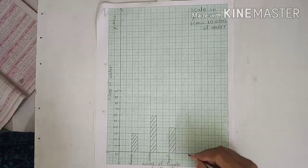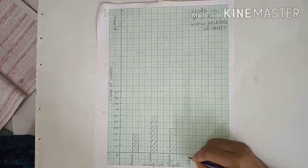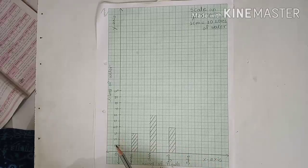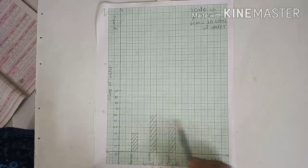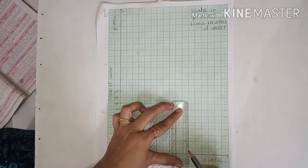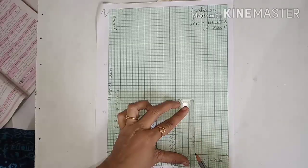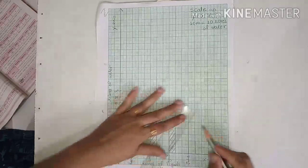Julie. Next family of Julie, her family uses 50 liters of water. 10, 20, 30, 40, and 50. 50 is here. Okay.